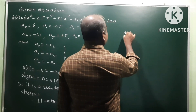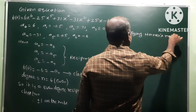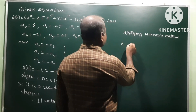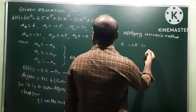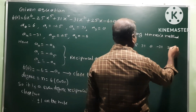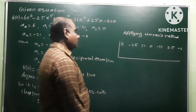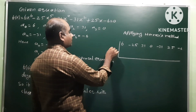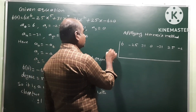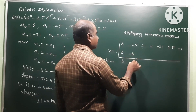Apply Horner's synthetic division method. The coefficients are: highest power coefficient 6, then -25, then 31, then 0 (for x³), then -31, then 25, then -6. Two roots are plus or minus 1, so x = +1.